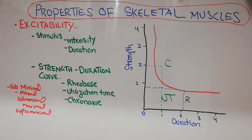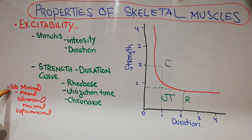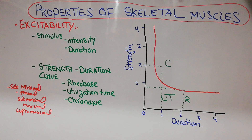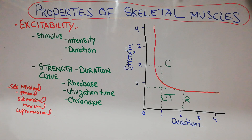For example, if a change in temperature occurs and the change is very little, then that stimulus intensity will be considered subminimal. A subminimal stimulus will not be able to produce any excitability or contraction in the muscle. If the change is just enough to produce some change or just excite the muscle, then that stimulus will be considered minimal.